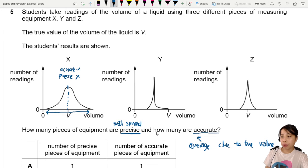Y looks a bit weird, so I'm going to skip that first. Let's look at Z. The average of it is, oh, it's very symmetrical and nice. So the average value would be at V, so it's very accurate.